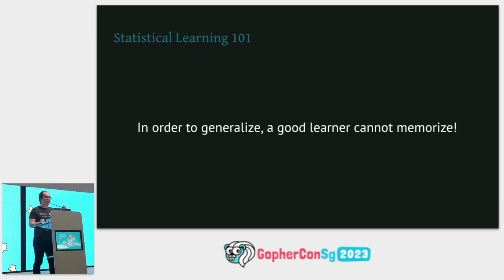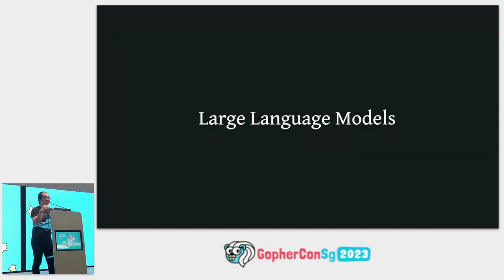Natural language, as it is, has an infinite VC dimension. We do have ChatGPT, so let's talk about large language models. LLMs seem to fly in the face of traditional linguistics. What is it about LLMs that makes them so different?